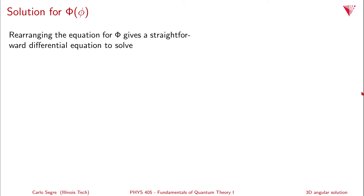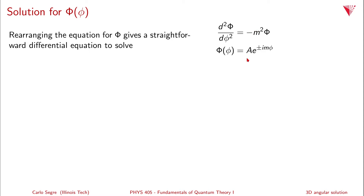The first solution is the solution to the azimuthal equation, which depends on capital Φ of φ. If we take the equation for φ developed in the last video and rearrange it, we get a straightforward differential equation: d² Φ/dφ² = −m²Φ. We've solved this before — the minus sign means we'll have a complex exponential solution. The solution is Φ(φ) = A·e^(±imφ). When we take the second derivative, we get ±im², both of which give −m².